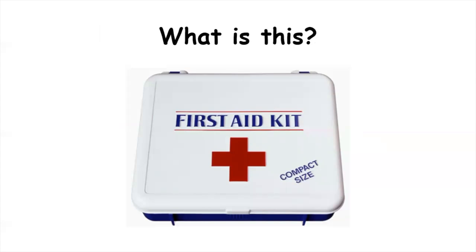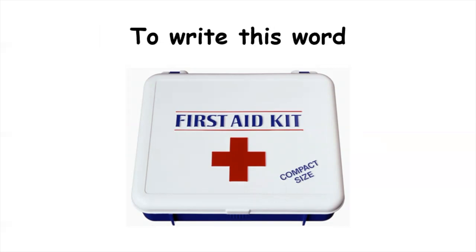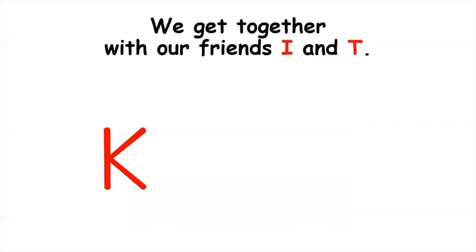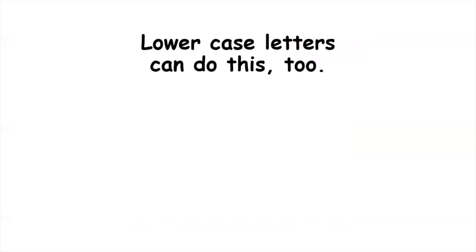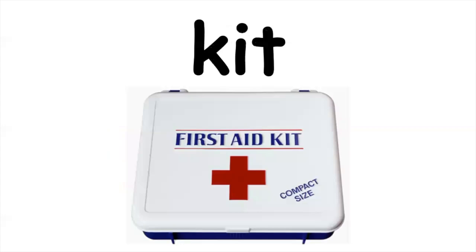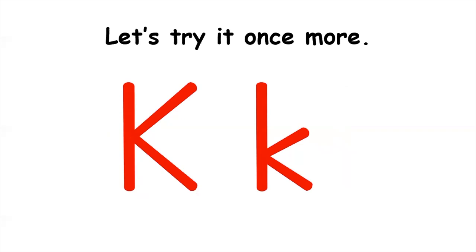Let us show you. We're a great team. What is this? Kit. To write this word kit, we get together with our friends I and T. K-I-T. Follow along with me by saying each letter sound: K, I, T. Say it faster — kit. Kit. Wow, you are reading!